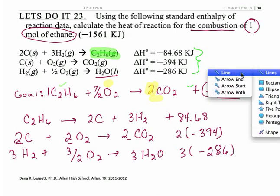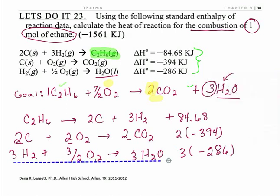Okay. Now you always, always, always want to do a double check that everything canceled the way you anticipated it would. And two solid carbons on the product, two on the reactant, those cancel. Three H2, and they were gases all throughout, three H2 cancel. So that's everything that cancels.